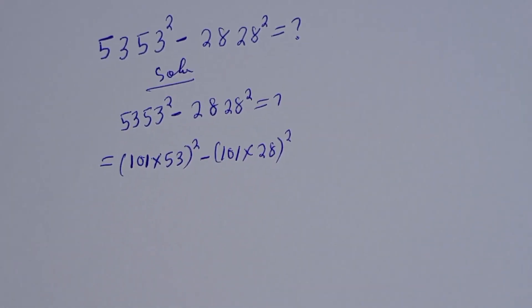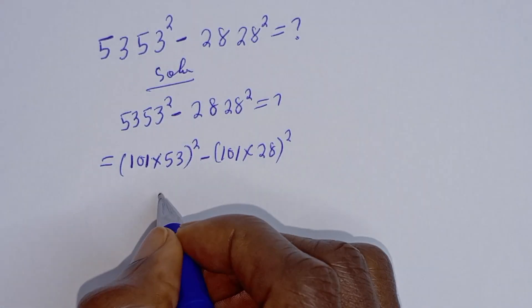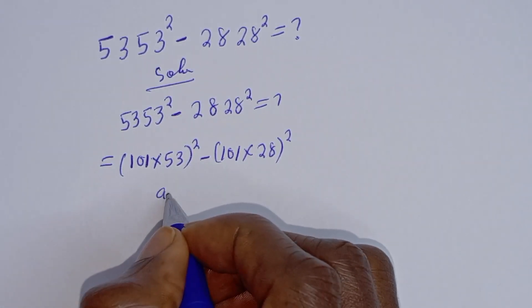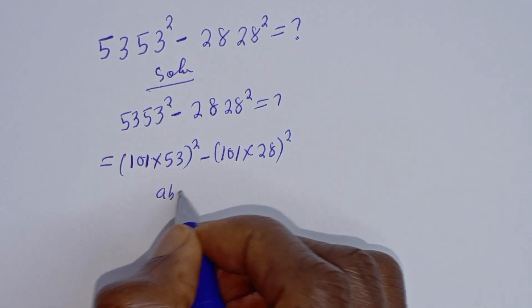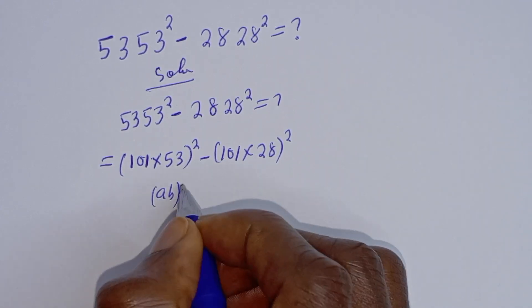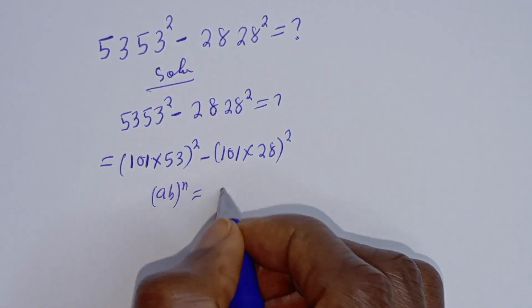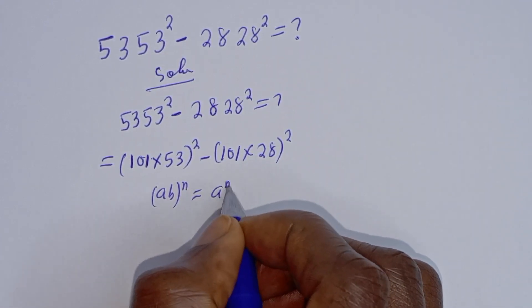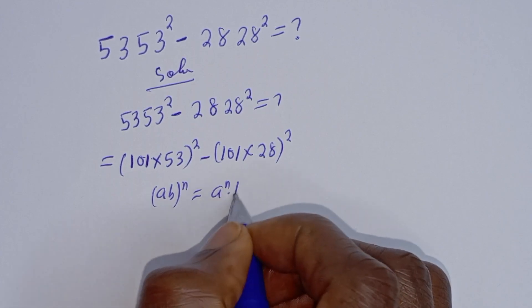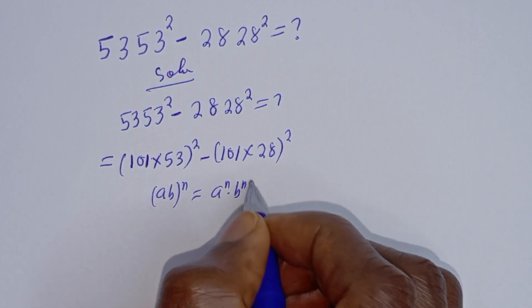Take note of this: if you have (a × b) to the power of n, this is equal to a raised to the power n, multiplied by b raised to the power n.